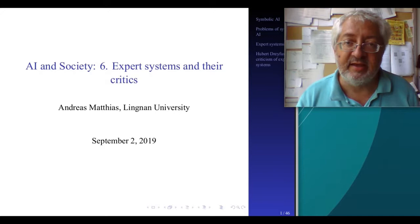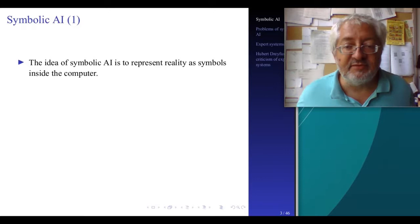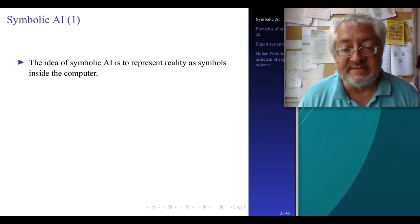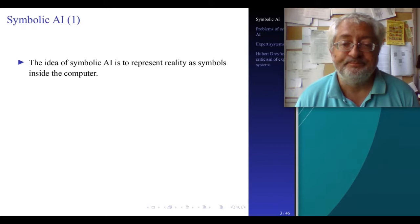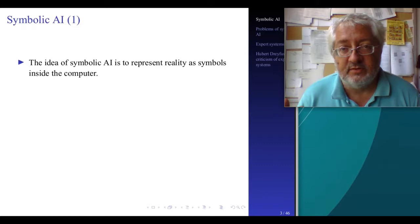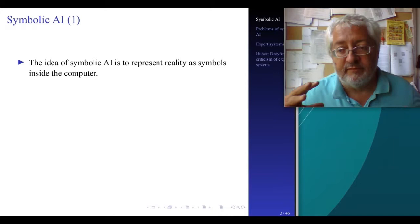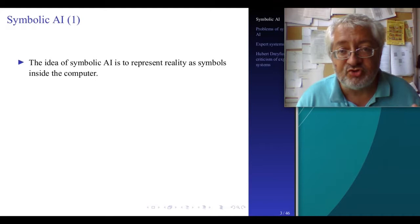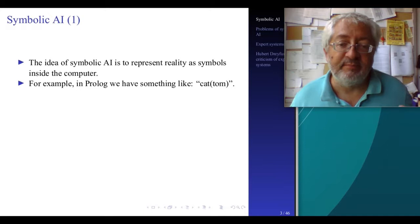So first, what is symbolic AI in itself? The idea of symbolic AI is to represent reality as symbols inside the computer. This means that the computer does not have any sensory experience of what things are outside of itself, outside of the computer, but it has only a representation of real things as symbols inside the computer. So for example in Prolog you have something like cat in brackets tom.